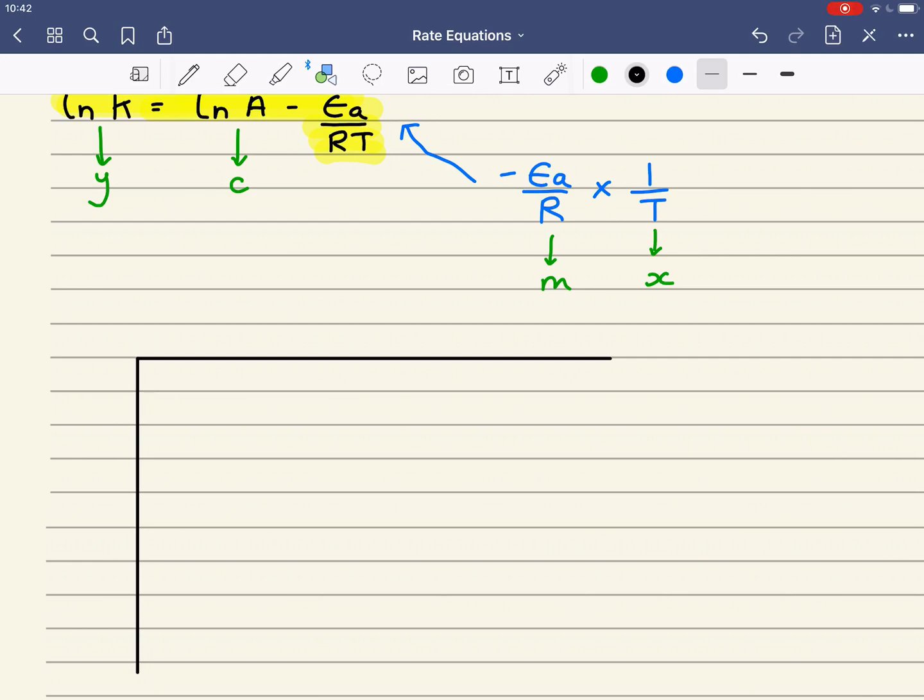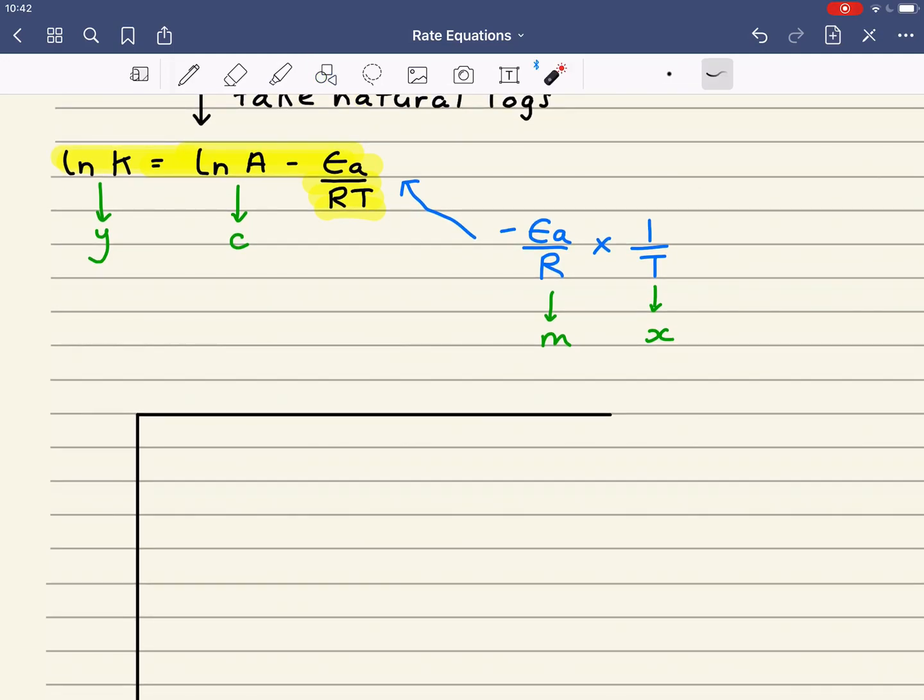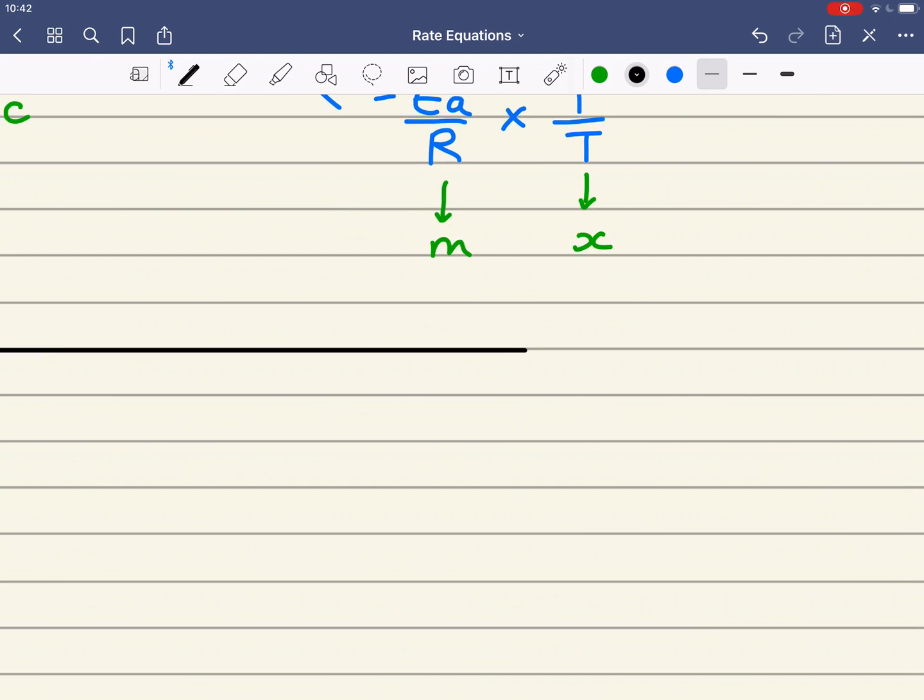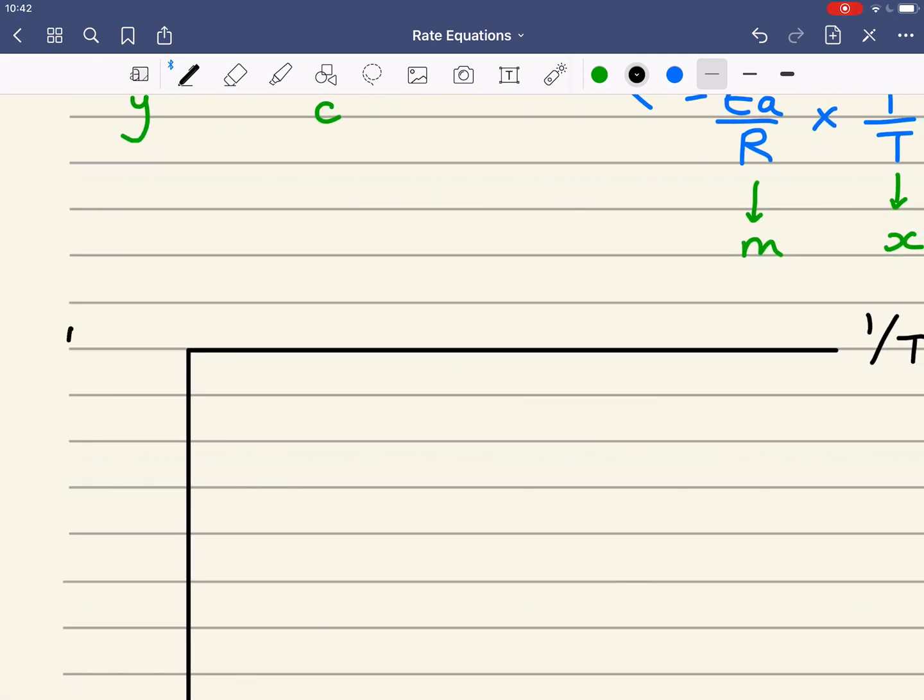Now, we need to draw then a graph of 1 over T on my x axis against lnk on my y axis. So I've got my 1 over T on my x axis, and then lnk on my y axis.